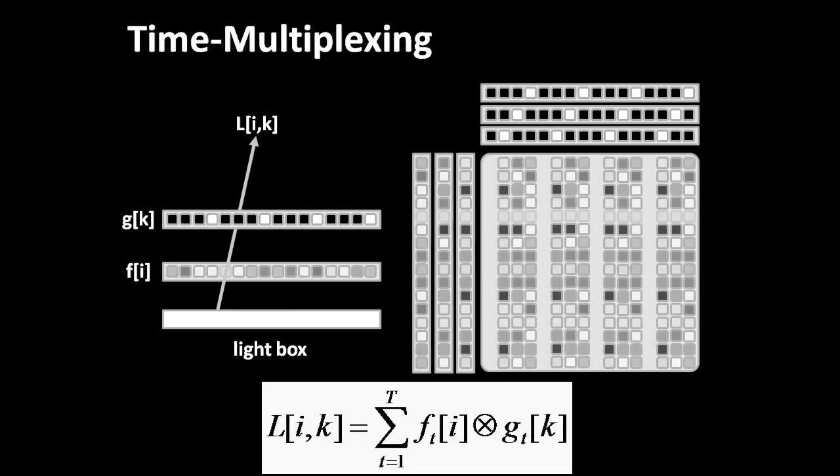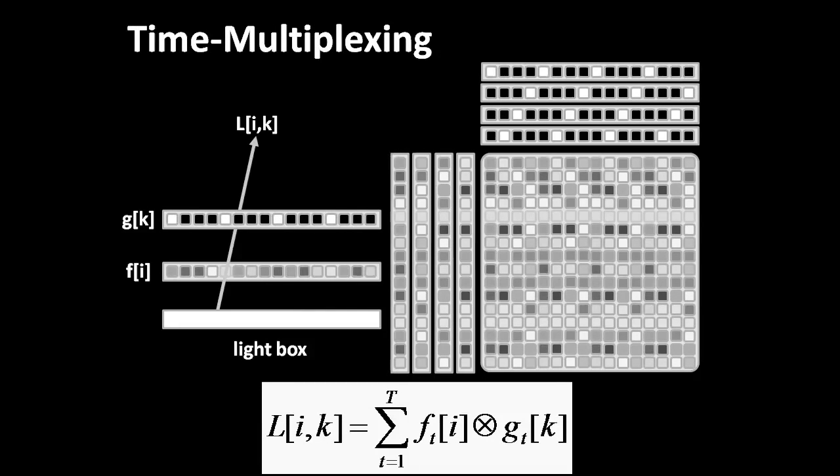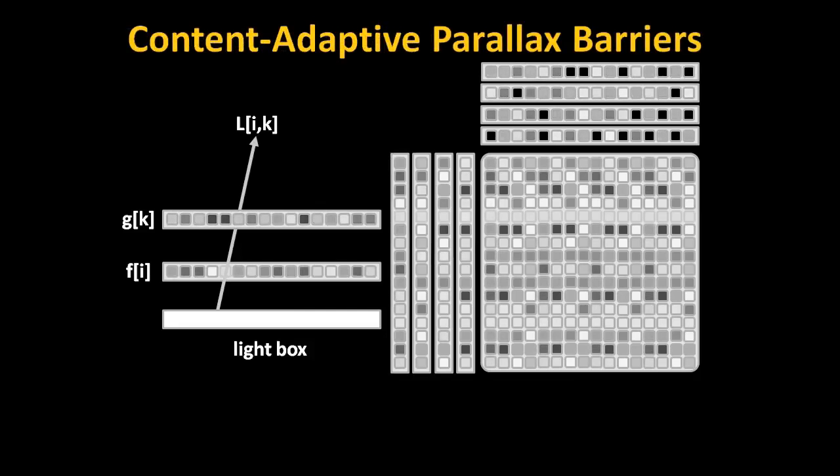Time multiplexing using translated pinhole arrays can compensate for resolution loss, but the display will remain dim.